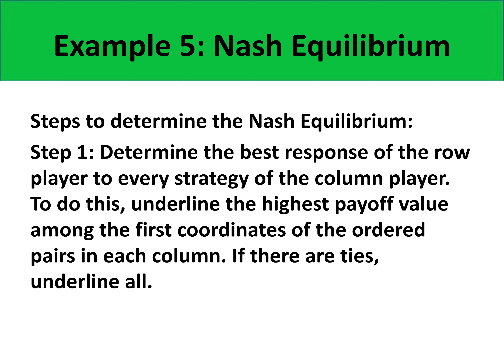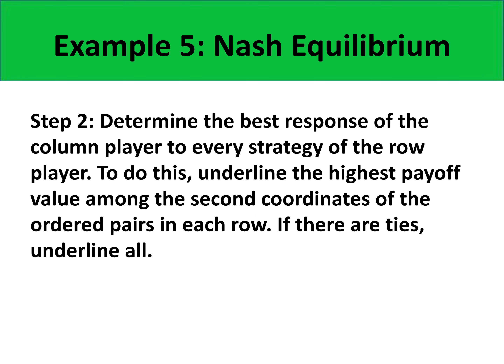Here are the steps to determine the Nash Equilibrium of a game. First step: determine the best response of the row player to every strategy of the column player. To do this, underline the highest payoff value among the first coordinates of the ordered pairs in each column. We're underlining the first coordinates because they belong to the row player. If there are ties, we underline all. For the second step, determine the best response of the column player to every strategy thrown in by the row player. To do this, underline the highest payoff value among the second coordinates of the ordered pairs in each row. If there are ties, underline all.